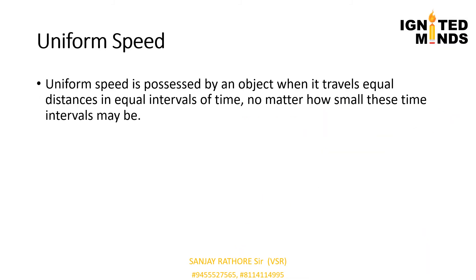Now we discuss uniform speed, also called constant speed. Constant speed is when an object covers equal distances in equal intervals of time. For example, suppose a car travels 5 metres every second throughout the journey — its speed is uniform, equal to 5 m/s. Note that wireless and radio signals travel with constant speed in a medium; the speed of wireless signals in air equals the speed of light, that is 3 × 10⁸ m/s.